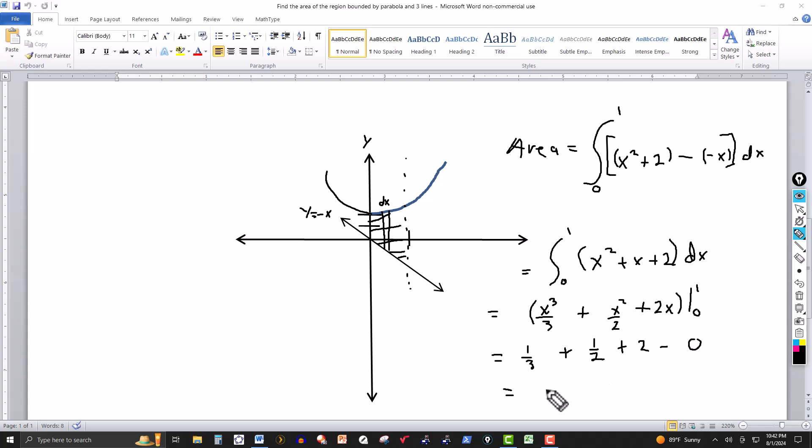Now we just add these fractions up. We got 1 third, 1 half, and 2 there, so the common denominator is going to be 6. 3 into 6 is 2 times 1 gives us 2. 2 into 6 is 3 times 1 gives us 3. 1 into 6 is 6 times 2 gives us 12. Add these up, we get 17 over 6.